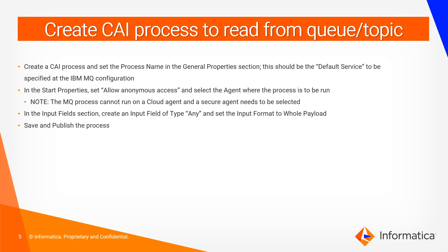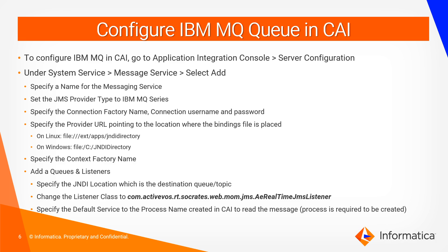On CAI, before even configuring the JMS, a CAI process has to be created which will be used during the configuration. It is better to have a CAI process created first, which will be used to read these messages from the queue or the topic. As part of the configuration of the JMS queues, go to the application integration console server configuration under the message service.